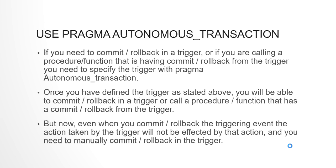Once you define the trigger as PRAGMA AUTONOMOUS_TRANSACTION, it allows all of these. But now you have a new responsibility of explicitly committing or rolling back within that trigger. Whatever happens with the triggering event — whether it is committed or rolled back — that will not affect the trigger statements. If you are doing 10 things in the trigger, you have to manually commit or rollback them. This can lead to some confusion, which I'll demonstrate.